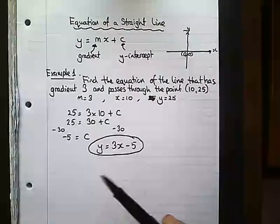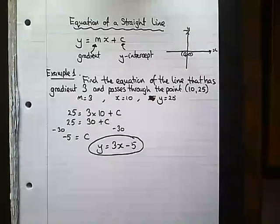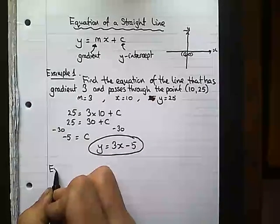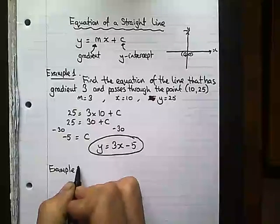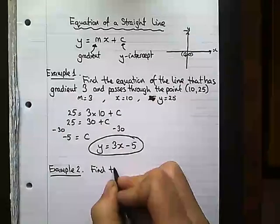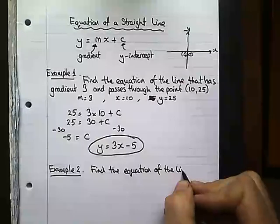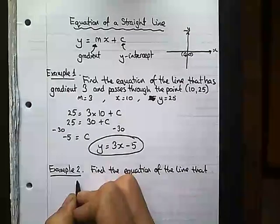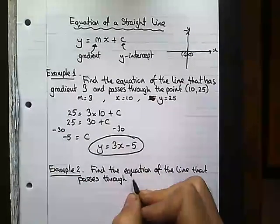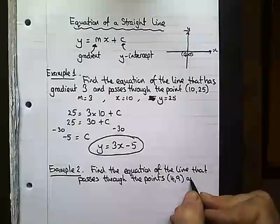Sometimes they don't give you the gradient and what they do is give you two coordinates, but we can find out the gradient because we did that recently between two coordinates. We worked out how to find the gradient. So my second example is: find the equation of the line that passes through the points (4, 9) and (8, 17).